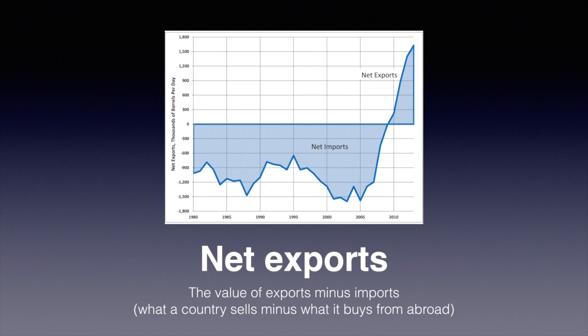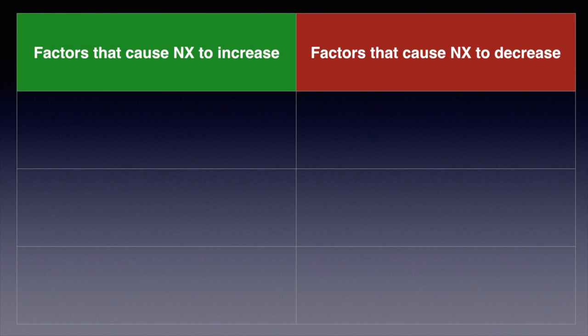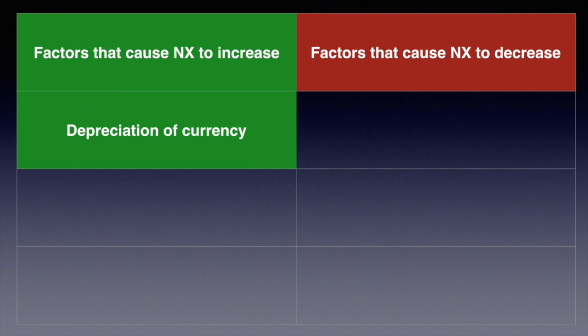Finally, net exports. We have to see the factors that would increase or decrease the value of net exports, calculated by subtracting imports from exports. If the domestic currency depreciates, it takes less foreign currency to purchase our domestic currency. For example, if the Chinese RMB depreciates against the dollar, it now takes more RMB to buy US dollars, making American imports more expensive. The US dollar now buys more RMB, so it takes fewer dollars to buy Chinese exports, leading to an increase in exports for China and increasing Chinese aggregate demand.